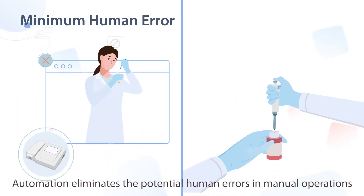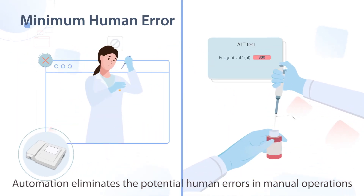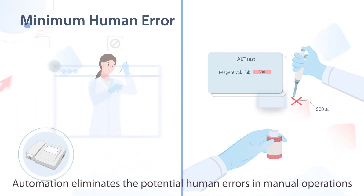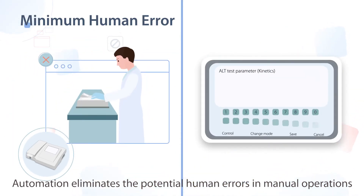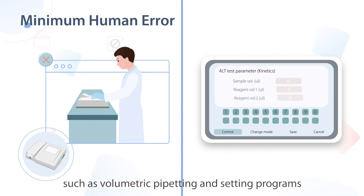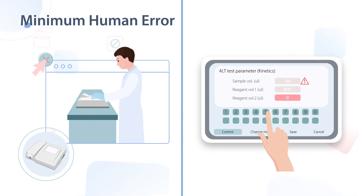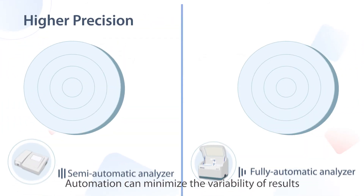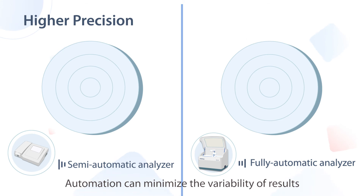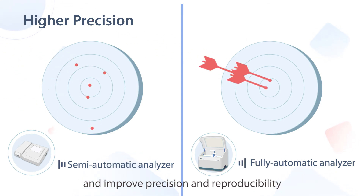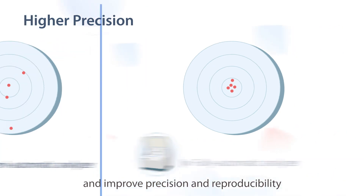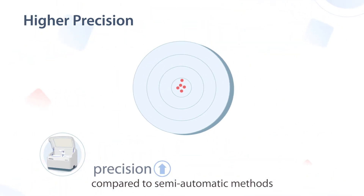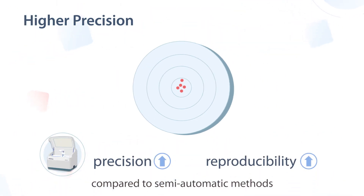Automation eliminates the potential human errors in manual operations such as volumetric pipetting and setting programs. Automation can minimize the variability of results and improve precision and reproducibility compared to semi-automatic methods.